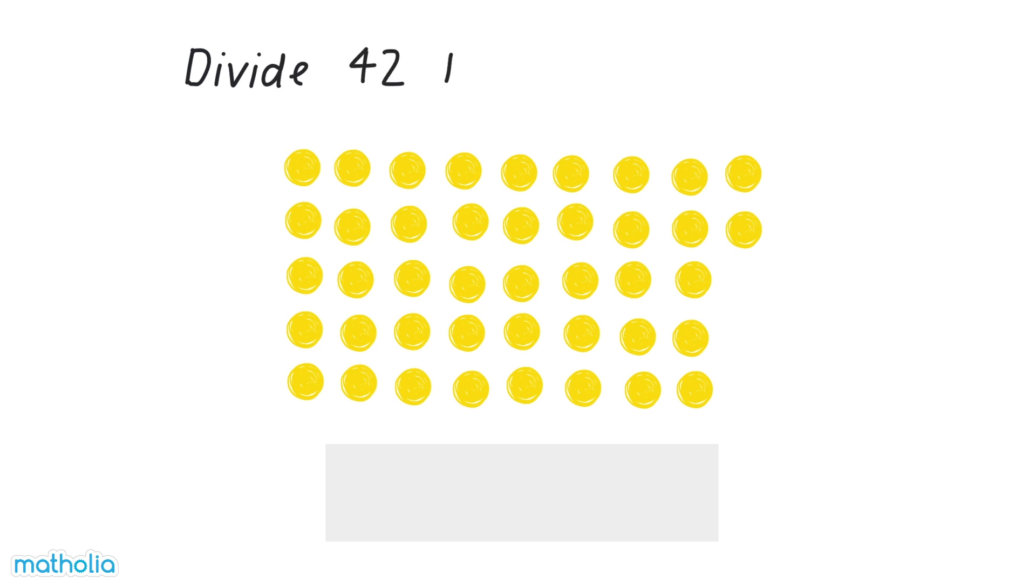Let's divide 42 by six. There are 42 dots. Let's make groups of six dots and then count the total number of groups we've made.